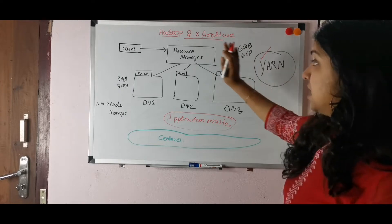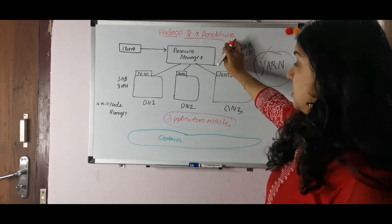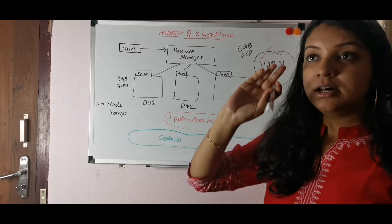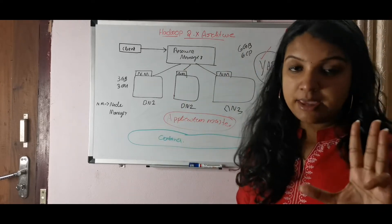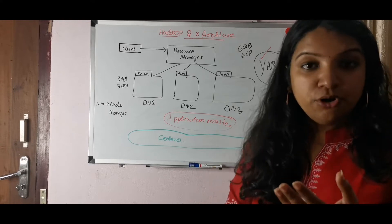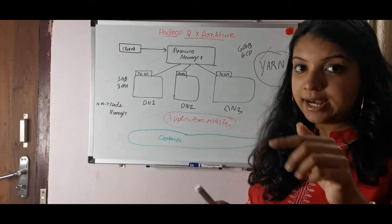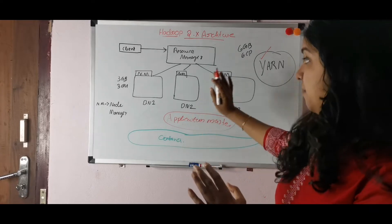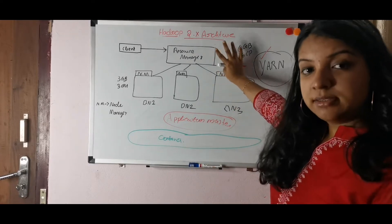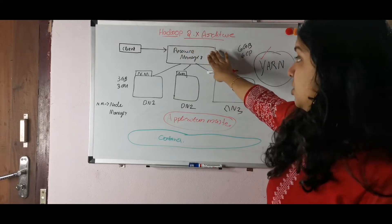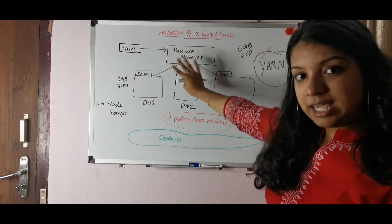This is the implementation in the Hadoop 2.x architecture. In Hadoop 1.x we had five components: Name Node, Job Tracker, Task Tracker, Secondary Name Node, and Data Node. In 2.x, we replace the Job Tracker with the Resource Manager.